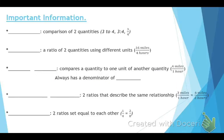First, there are some vocabulary terms you need to know. A comparison of two quantities — for example, three to four — can be written three different ways. That is called a ratio.